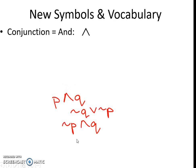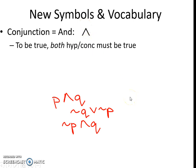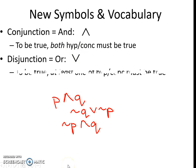We have new symbols in vocab. Conjunction means AND — please write A and D — and it's this symbol pointing up. To be true, both hypothesis and conclusion must be true. Next symbol is disjunction, which means OR — please write OR, and it's pointing down. To be true, at least one of the hypothesis and conclusion must be true.